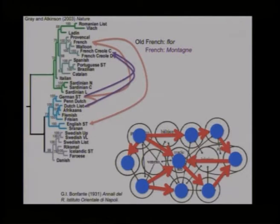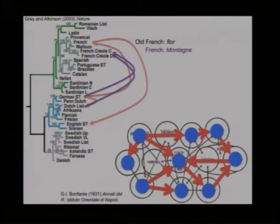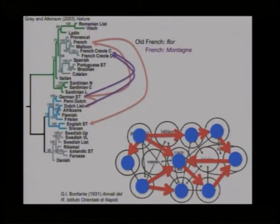Bonfante's illustration from the early 1930s is essentially a network — a picture of language interaction. However, the phylogenetic tree on the left is a quantitative model for relations between languages, whereas Bonfante's network is just an illustration: it shows relations but supplies no quantitative numbers. So we took the same methods we used for prokaryotic genome evolution and applied them to languages.